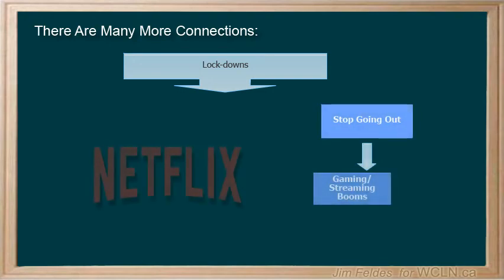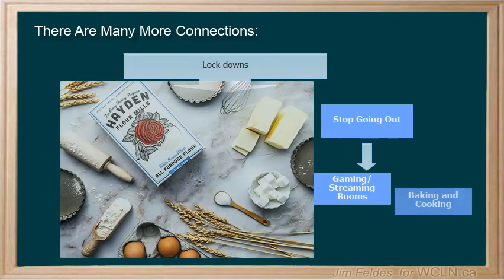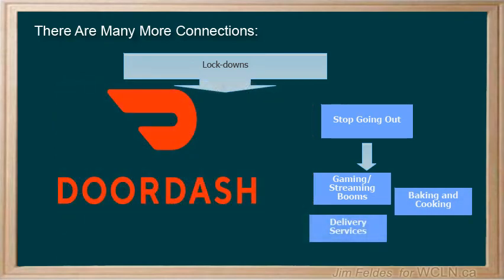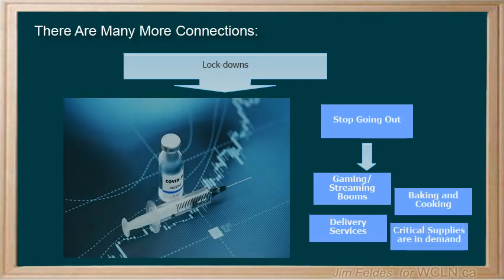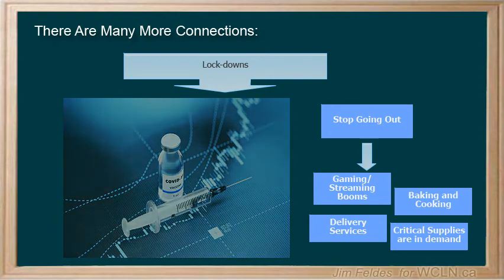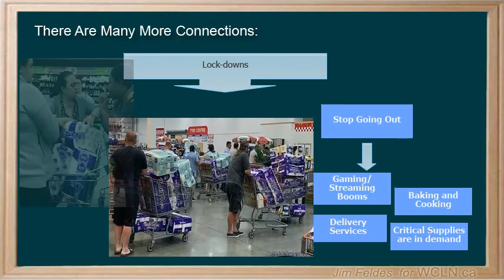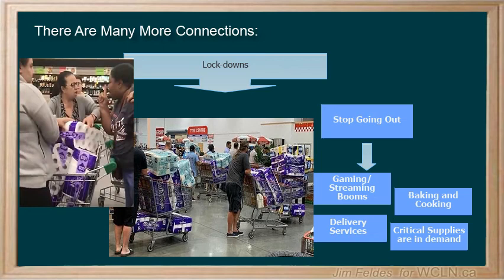Gaming and binge watching increased dramatically. Popcorn was hard to find. We all became bakers. Delivery services expanded. Some careful evaluation of these trends could have been quite lucrative as an investor — for example, cleaning suppliers or drug companies racing to find vaccines. Although it is often hard to predict what will be deemed critical in a crisis.